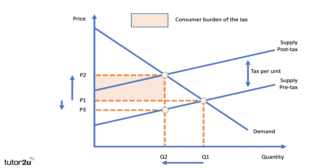The producer burden is shown by the area shaded green. The government receives both shaded areas — it collects the full tax revenue. In this situation it looks as if the consumer has paid most of the tax.